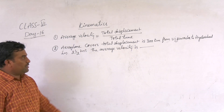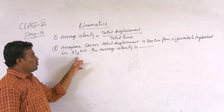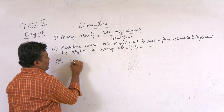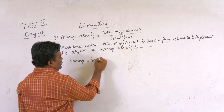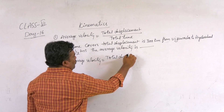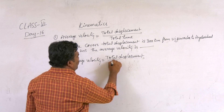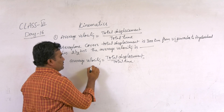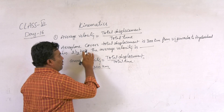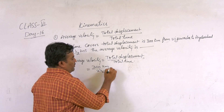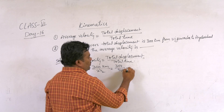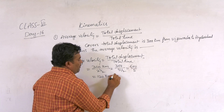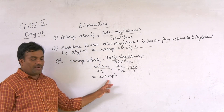The aeroplane covers a total displacement of 300 km from Vijayawada to Hyderabad in two and a half hours. Average Velocity equals total displacement divided by total time. So here it is 300 km divided by 2.5 hours, which is 300 divided by 5/2, giving us 600 divided by 5, which equals 120 km per hour. The average velocity is 120 km per hour.